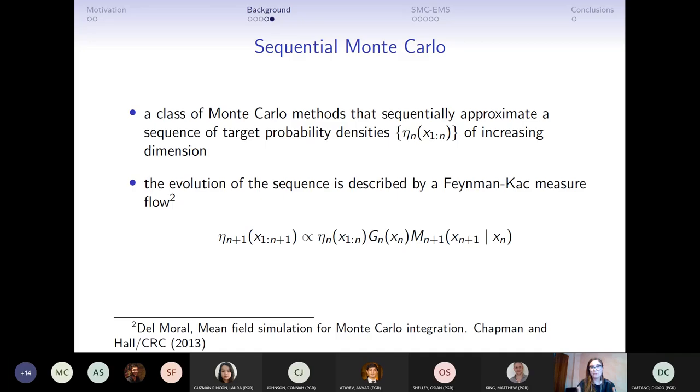So this is just a picture explaining what SMC does, but actually more formally, SMC is a full class of Monte Carlo methods which are built to approximate a sequence of probability distributions or densities that increase in dimension at each iteration. And the way the sequence evolves is a Feynman-Kac measure flow, which is a very fancy name to say that to move from one probability measure to the following one, we weight according to this function g and we propose a new state according to this n, which is nothing more than a Markov kernel.